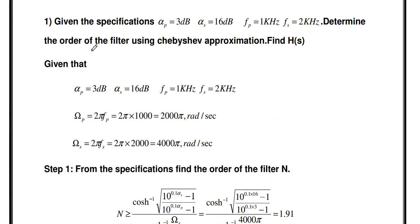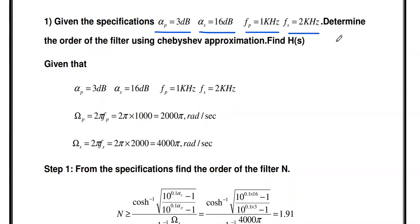Welcome to my channel. Today we are going to solve a problem related to Chebyshev filter design. The given specifications are: alpha_p equal to 3 dB, alpha_s equal to 16 dB, fp equal to 1 kilohertz, and fs equal to 2 kilohertz. We need to determine the order of the filter using Chebyshev approximation and also find H(s).